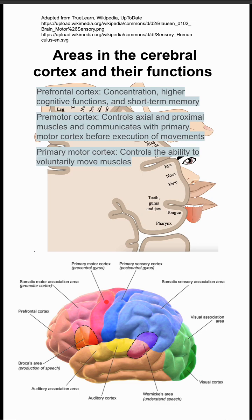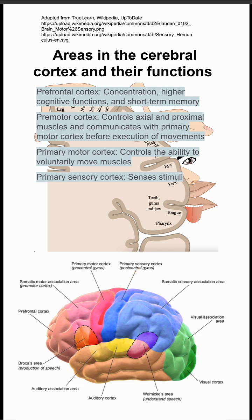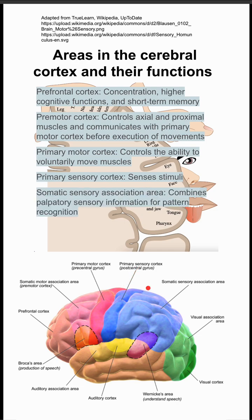The primary motor cortex controls your ability to voluntarily move muscles according to the position on the homunculus. The primary sensory cortex also has a homunculus, and it senses stimuli.